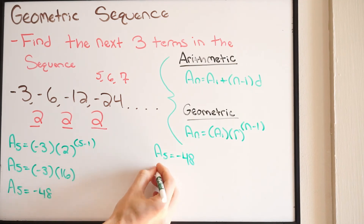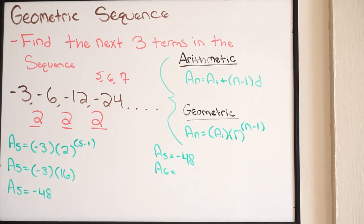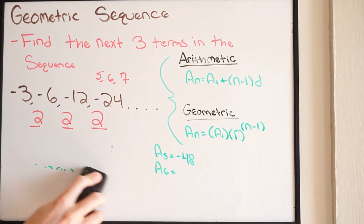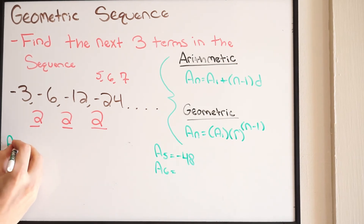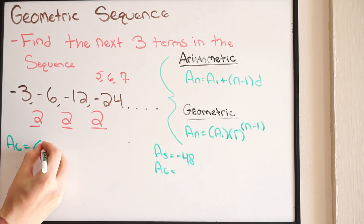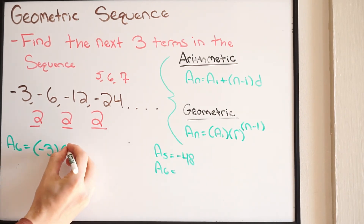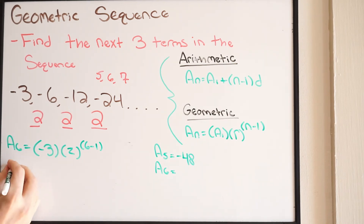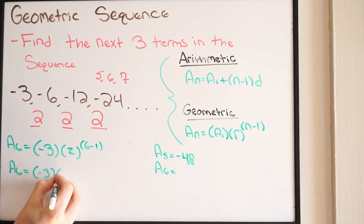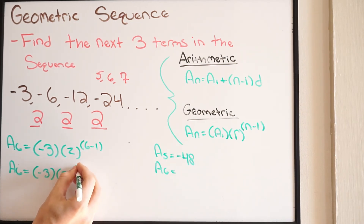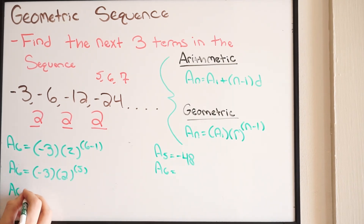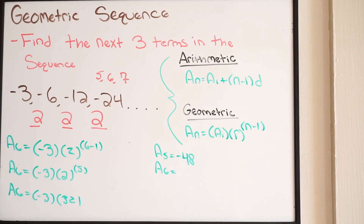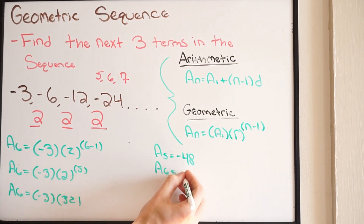Now we want to find the sixth term, A of 6. Going through the same process: A of 6 equals negative 3 times 2 to the power of 6 minus 1, which is 2 to the fifth power. 2 to the fifth power is 32. So we get negative 3 times 32, which gives us negative 96. So A of 6 is negative 96.